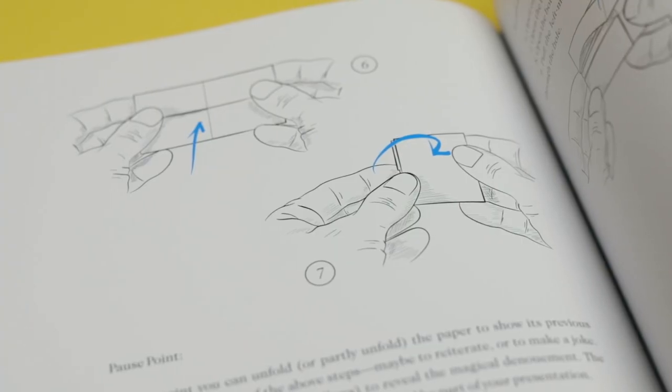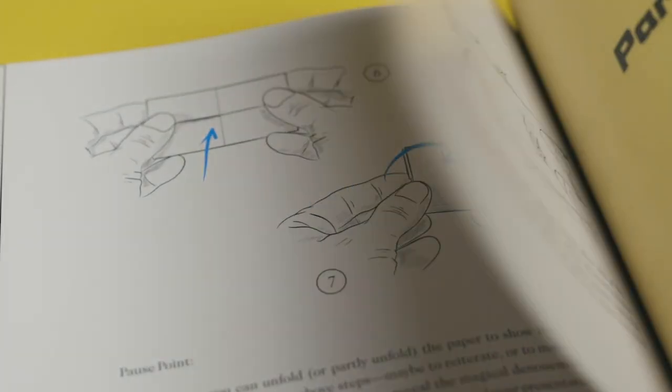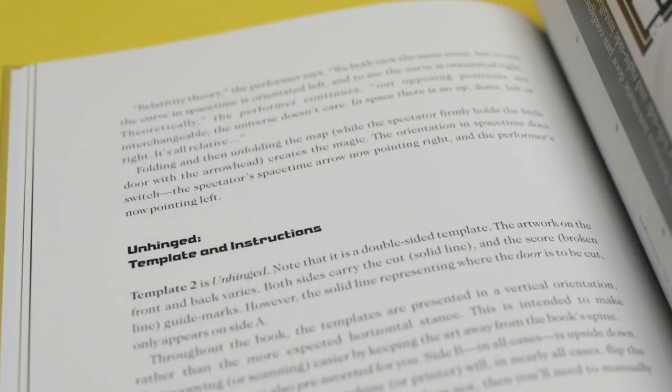The effects in this book aren't just easy, they're completely self-working. If you can fold a piece of paper, you can perform every trick in machinations.